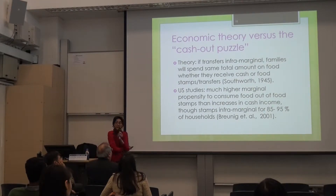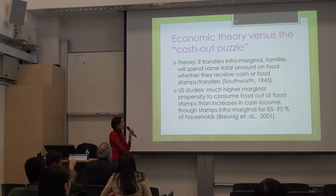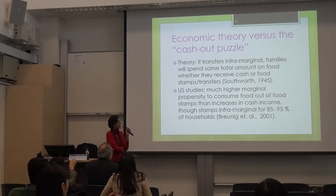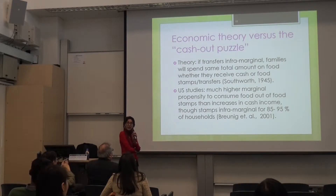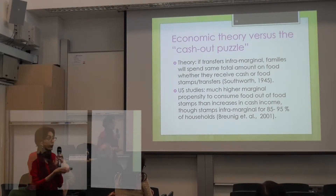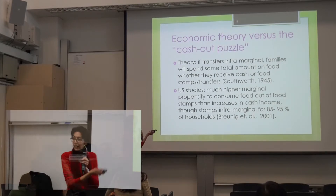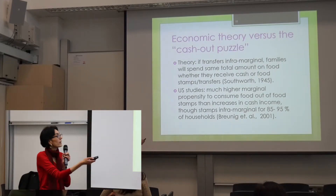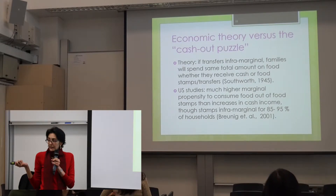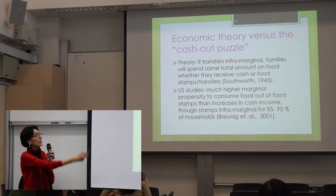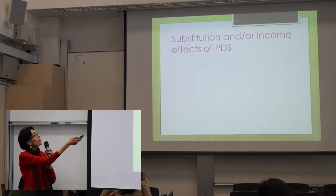However, the empirical data is actually different. The history of US food stamps has shown through several studies that households actually tend to consume more food out of food stamps than out of increases in cash income, even when these food stamps provision is intramarginal for roughly 85 to 95% of the households. This has been called the 'cash-out puzzle' in the US — why didn't they cash out? Why are they actually using it all to buy food?